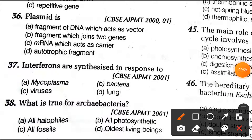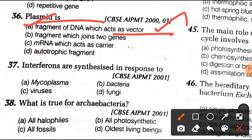Question number 36: a plasmid is a fragment of DNA which acts as a vector. Plasmids are used as vectors.